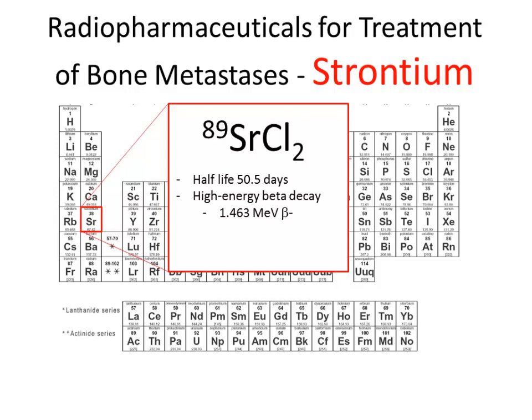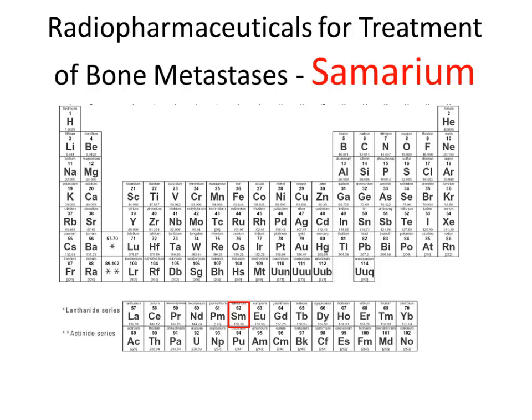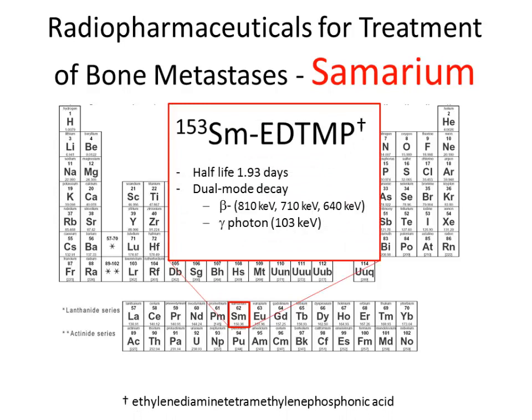The next agent was samarium-153, which doesn't have inherent affinity for the skeleton, but was hooked up to the pharmaceutical agent EDTMP, which has a phosphonic acid component similar to the bisphosphonates — that carrier takes it to the skeleton. Samarium-153 has a half-life of 1.93 days and a dual mode of decay: a beta particle for therapy and a gamma photon that allows fairly nice imaging of treated patients. However, for both strontium-89 and samarium-153, they were only ever approved for palliation of bone pain in patients with symptomatic bone disease.